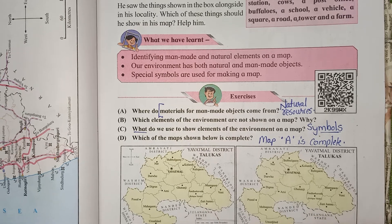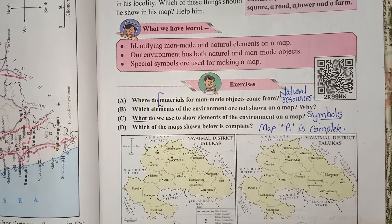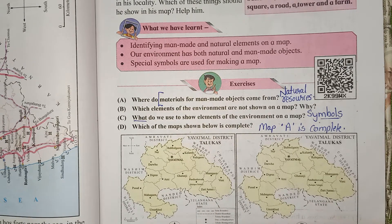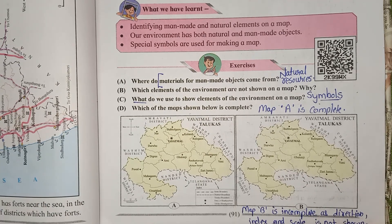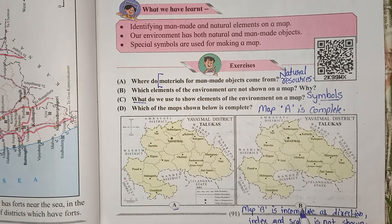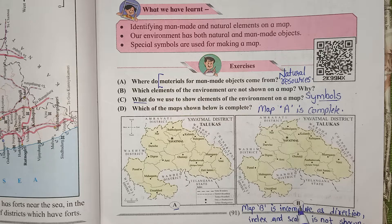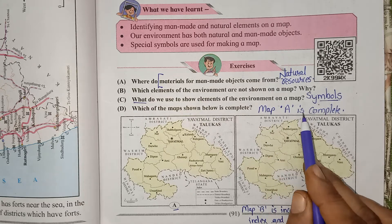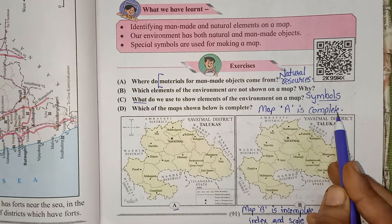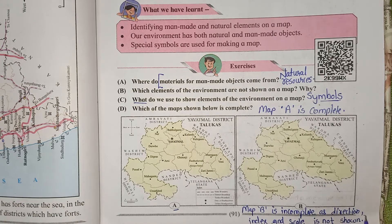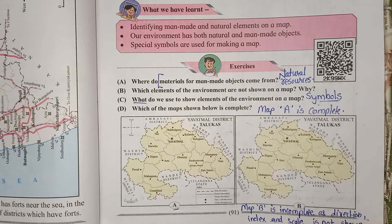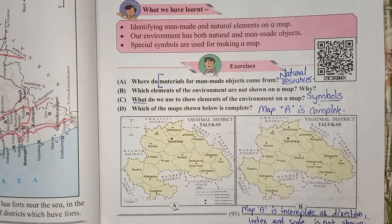Now we will see question D: Which of the maps shown below is complete? So children, you can see two maps — this is Map A and this is Map B. The answer is Map A is complete. If you look at Map B, it is incomplete as direction, index, and scale are not shown.